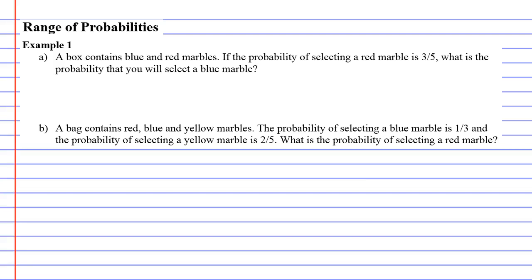Now, we mentioned before that all probabilities add up to 1. So if I've got the probability of getting a red marble plus the probability of getting a blue marble, they should equal 1 when I add them up. So the probability of getting red is 3 over 5. What would I add that to to get 1?